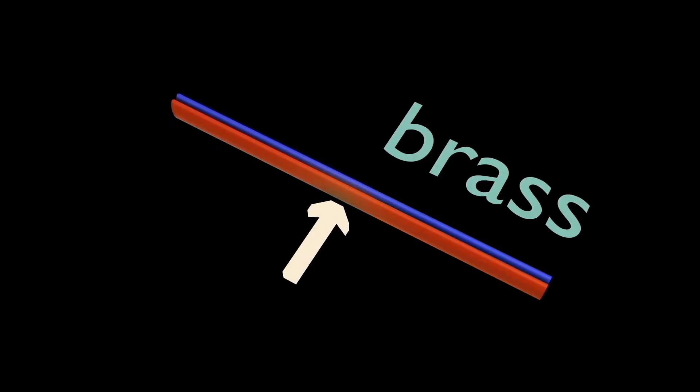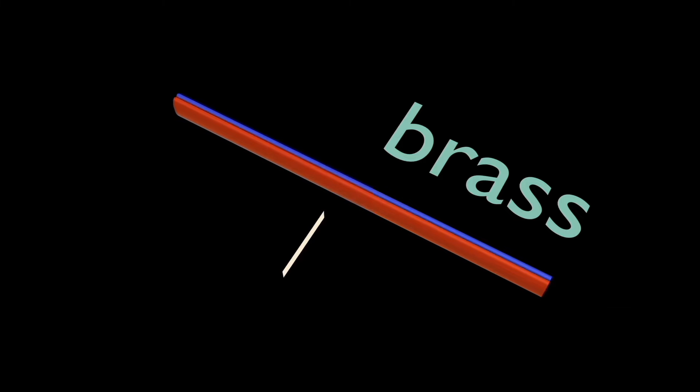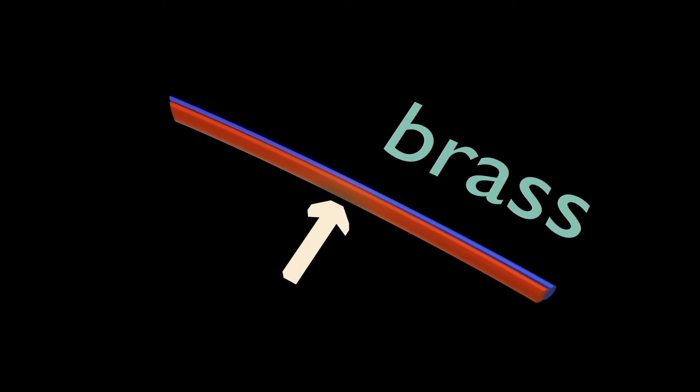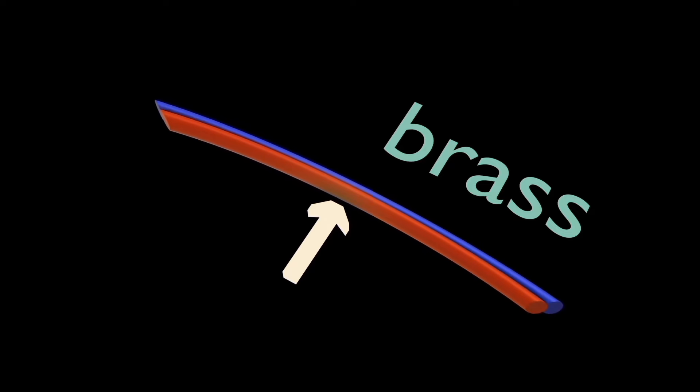For example, when brass and steel are used and they are heated separately they expand. But when they are fixedly attached, they bend forming a curving structure. This mechanism helps us to ensure the circuit breaker is properly designed.